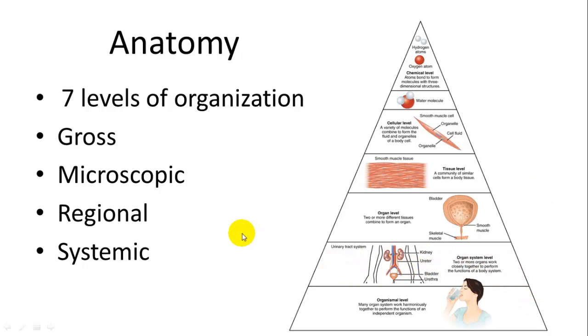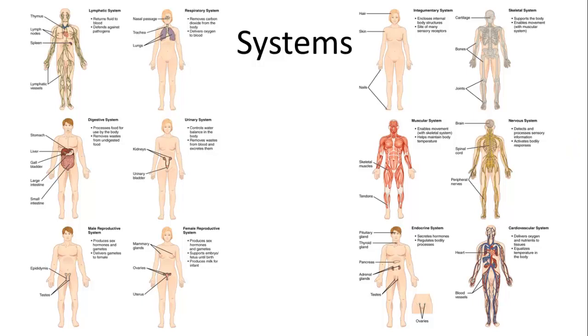The systems we will cover in Anatomy and Physiology 1 are the integumentary system, the skeletal system, the muscular system, and the nervous system. Not as many systems in A&P 1 because we do have some of these smaller microscopic things to study first.